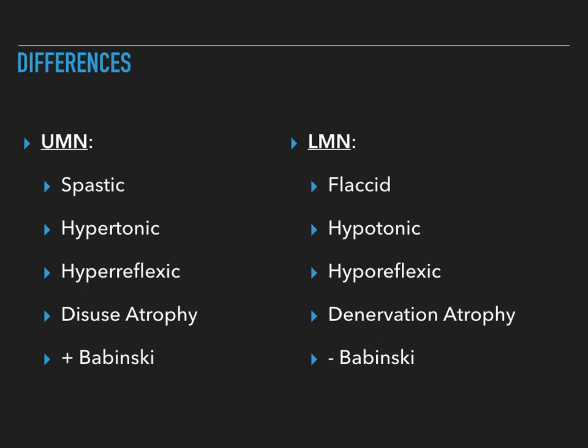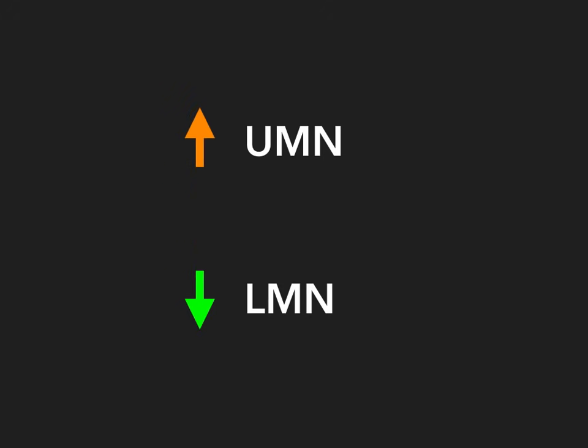Now that we've talked about the basic differences and what they mean, let's discuss the mnemonic for remembering this. When you think of upper motor neuron versus lower motor neuron, assign two arrows — up for upper, down for lower. This will be very easy to remember and it explains everything.